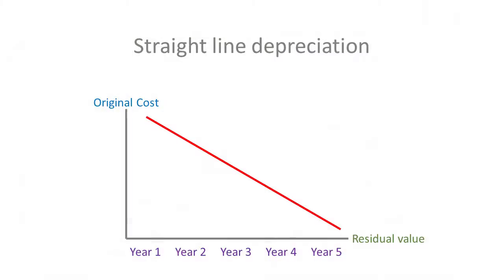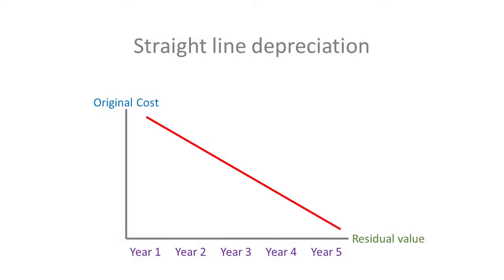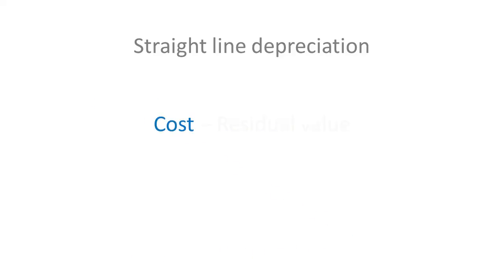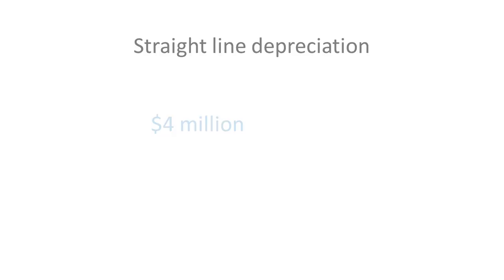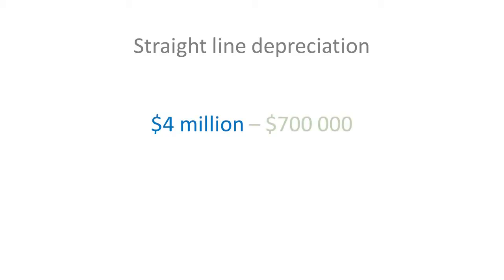The company uses a straight line method for calculating depreciation. The formula for depreciation would be cost less the residual value divided by the remaining useful life of the asset. The truck, which costs 4 million dollars, has an estimated residual value of 700,000 dollars and a useful life of 15 years.